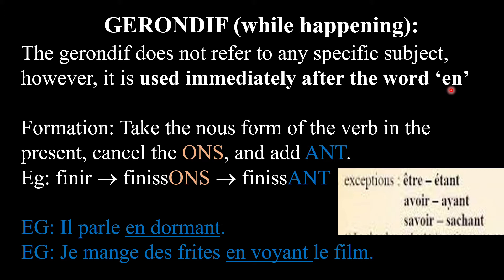The gérondif is not called a tense because it does not refer to any specific subject. For each verb, there is just one form of the gérondif. There are no six forms based on the six subjects, just like the past participle. For example, the participle of manger is mangeant, the participle of lire is lu. So just like that, each verb has only one present participle, just like each verb has only one past participle.